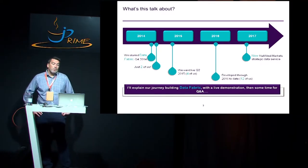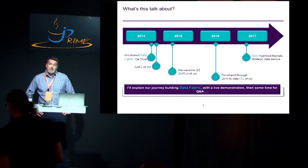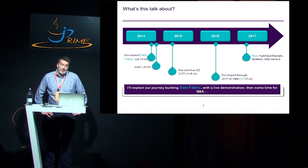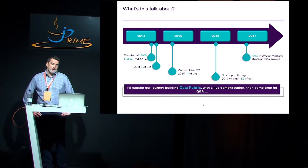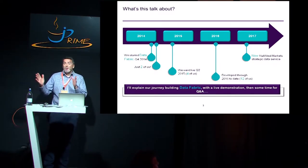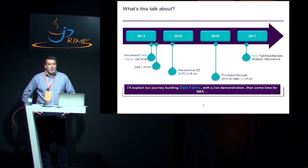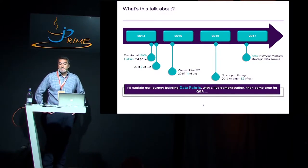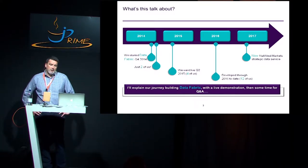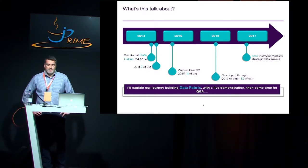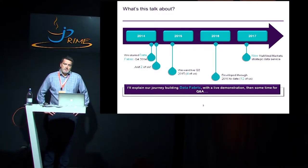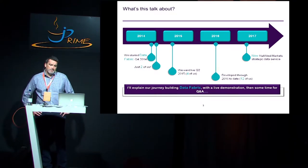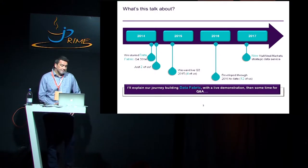A little bit about the timeline. We started the project — just two of us initially — towards the end of 2014. Like most successful projects, we got something into production within that magic sort of three-month window. We continued to roll the system out and grow the team throughout 2015 and into 2016. There are now 12 of us running the development and support activities. As we move into 2017, we're now the strategic data service for use within NatWest Markets.